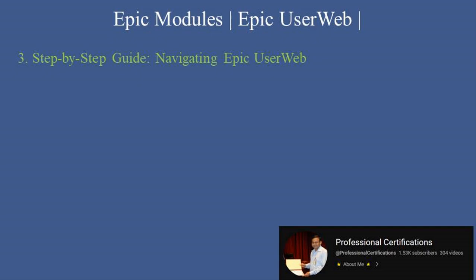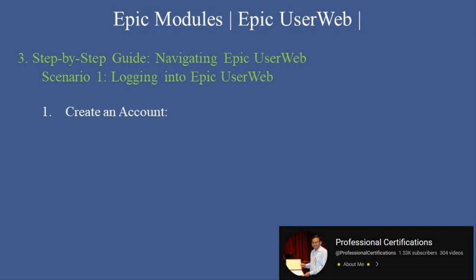Step-by-Step Guide: Navigating Epic UserWeb. Scenario 1 — Logging into Epic UserWeb. First, create an account by visiting the Epic UserWeb homepage and creating an account using your organization's credentials. Second, verify your access by completing the verification process to ensure you have the appropriate permissions. Third, log in using your username and password to access the UserWeb portal.